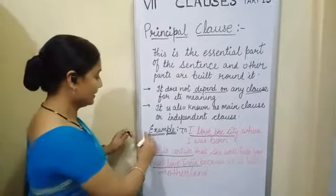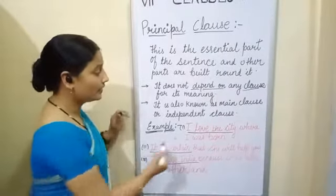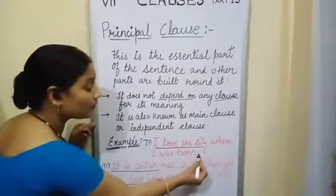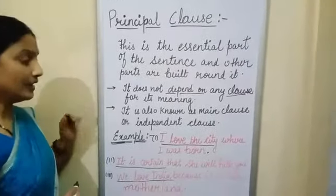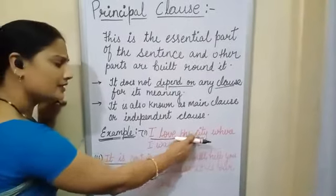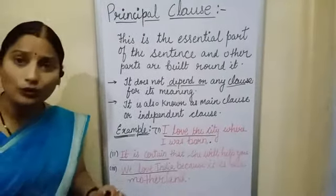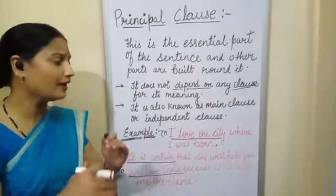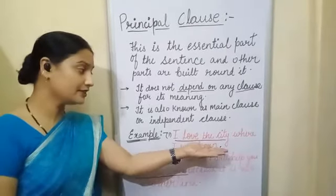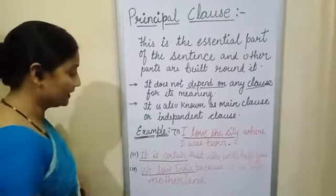Let's look at some examples. Example one: 'I love the city where I was born.' Here, 'I love the city' is a complete sentence on its own — it does not require further information. So 'I love the city' is the main clause.